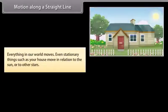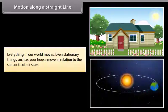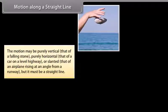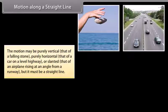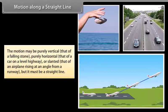Motion along a straight line. Everything in our world moves. Even stationary things such as your house move in relation to the sun or to the other stars. The motion may be purely vertical — that of a falling stone — purely horizontal — that of a car on a level highway — or slanted — that of an airplane rising at an angle from a runway — but it must be a straight line.